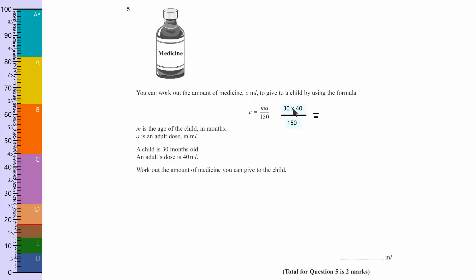Okay, so 30 times 40. To do that, you do 3 times 4, which is 12, and then put the zeros on. So that's two zeros. And it's still over 150.